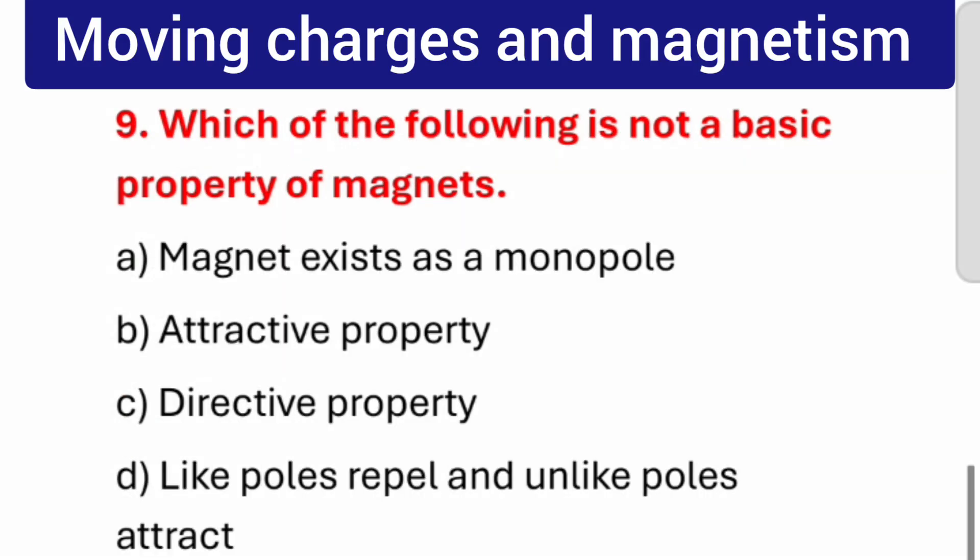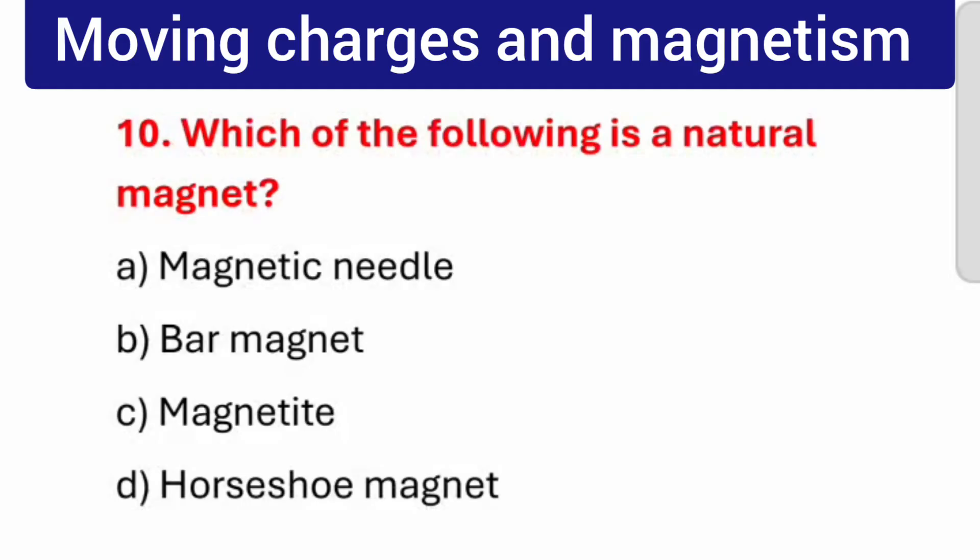Question number 9: Which of the following is not a basic property of magnets? The correct answer is magnet exists as a monopole. Question number 10: Which of the following is a natural magnet? The correct answer is Magnetite.